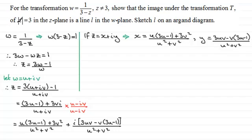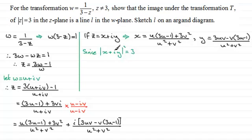Now we know that the modulus of z equals 3. So since the modulus of x plus iy must equal 3, if I square both sides we get the modulus of x plus iy all squared equals 3 squared, and therefore x squared plus y squared must equal 9.